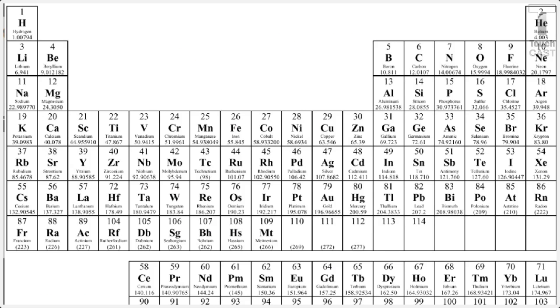So an important part of understanding valence electrons and reactivity within the elements is by knowing the groups on the periodic table. So we're only going to focus on groups 1 and 2 and groups 13 through 18.